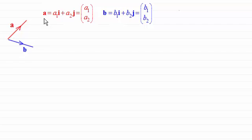So suppose we've got the vector a defined with components a1 a2 in the i and j directions respectively or as a column vector just a1 a2. And I've got a similar result here for the vector b.